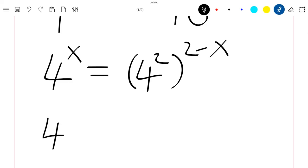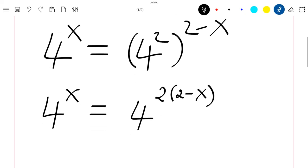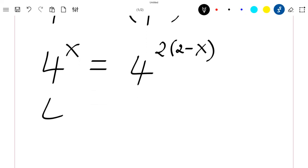So we have 4 to the power of x equal to 4 to the power of 2 times (2 minus x), which is 4 to the power of x equal to 4 to the power of 4 minus 2x.